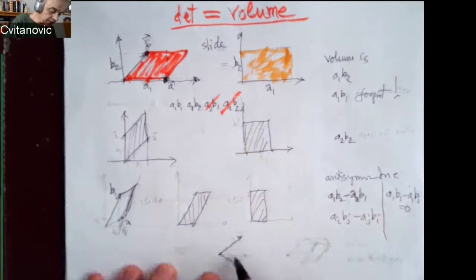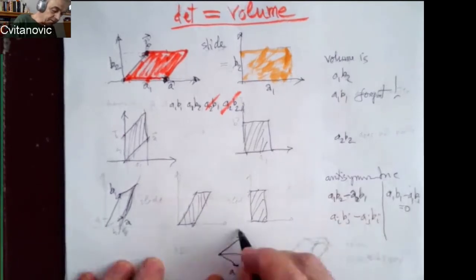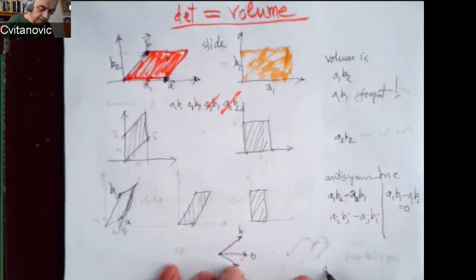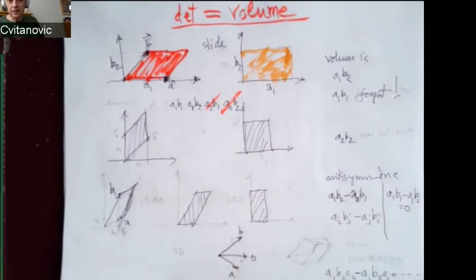So, in three dimensions, parallelepiped is defined by three vectors, which are the edges of parallelepiped. And you find out that you have to look at all components, anti-symmetrized in all possible ways. There will be six of these components. And that's called a determinant.